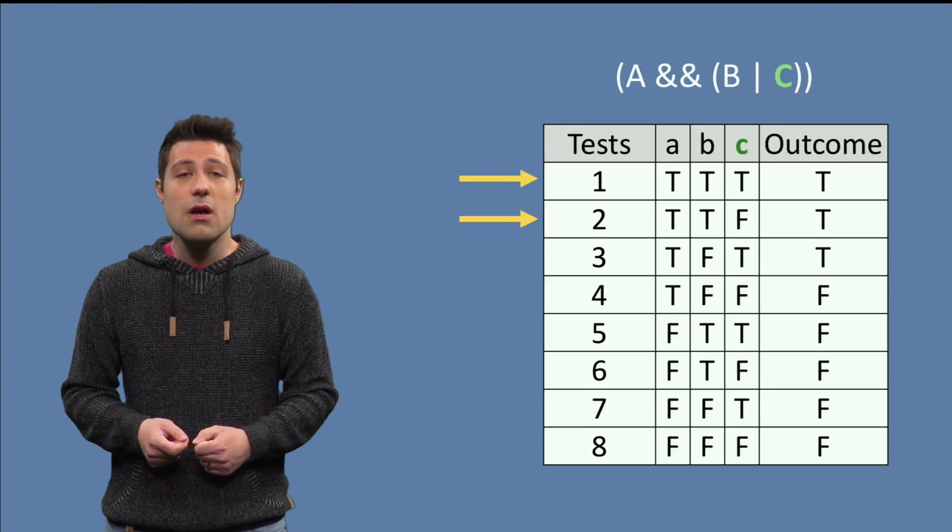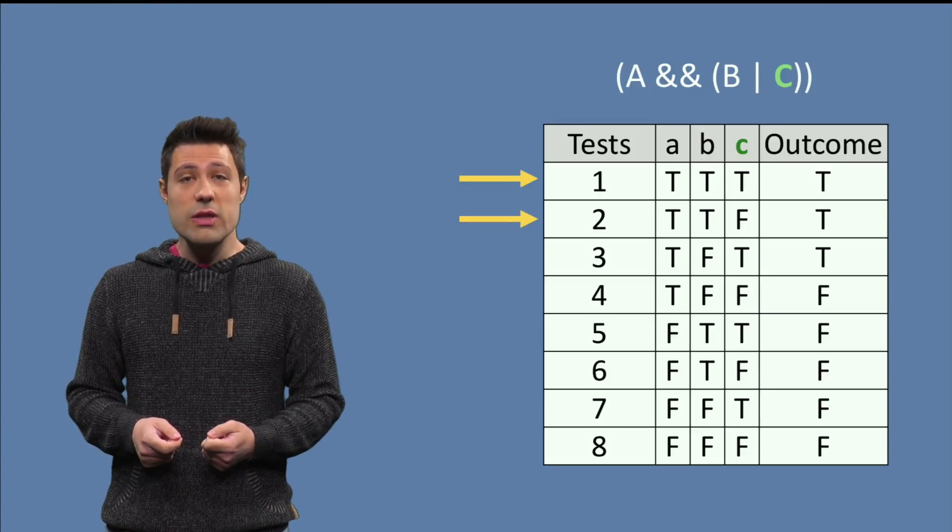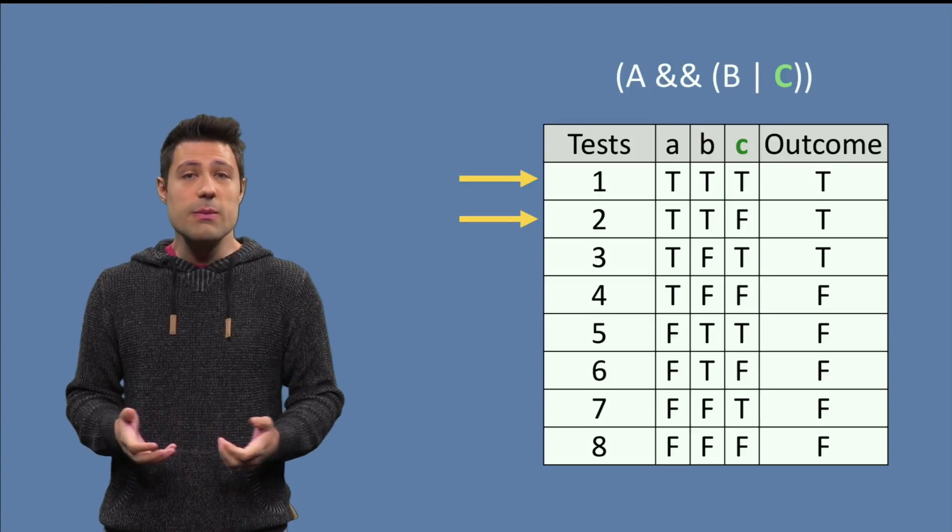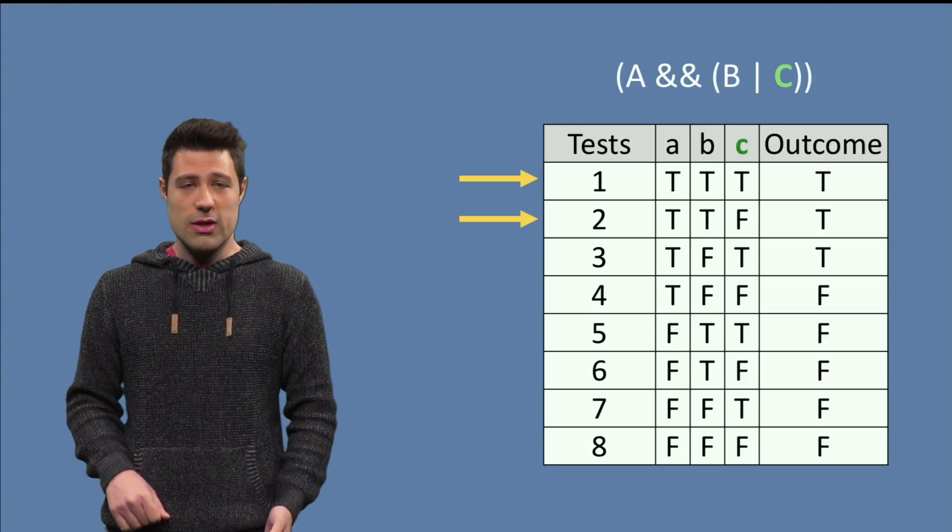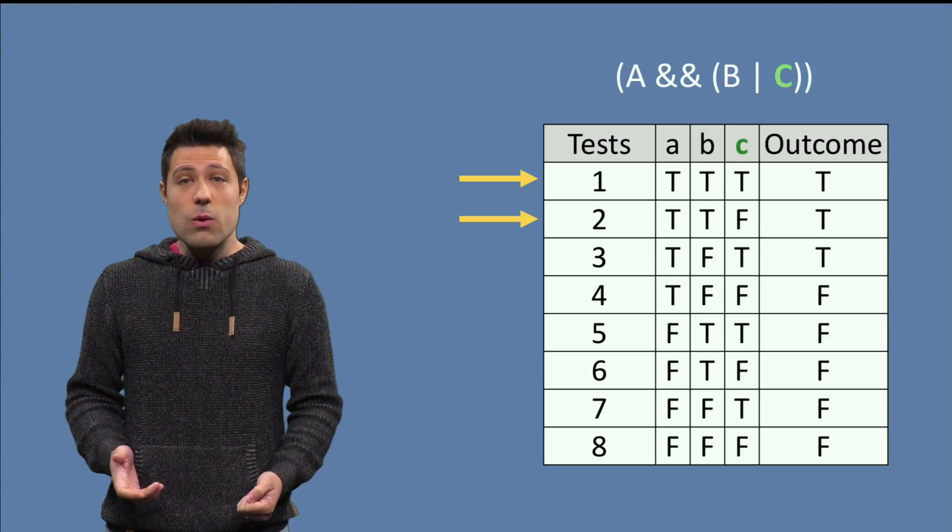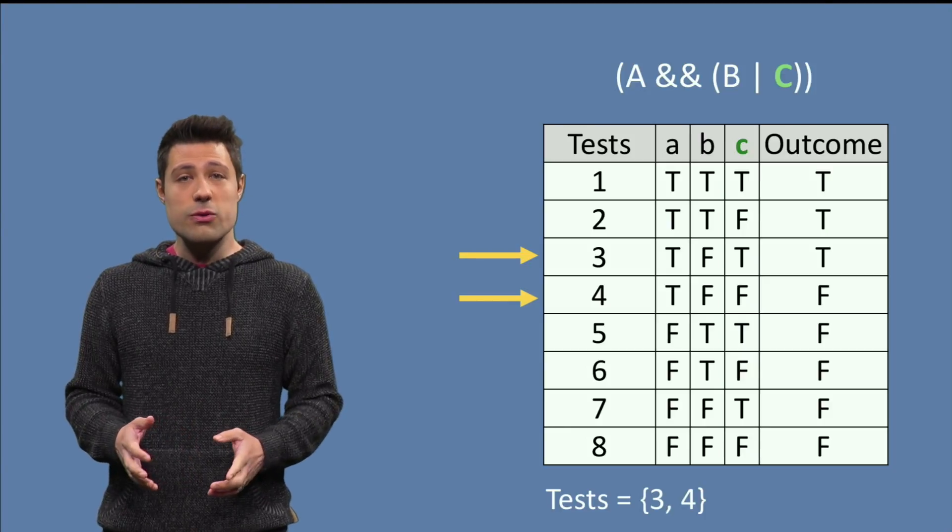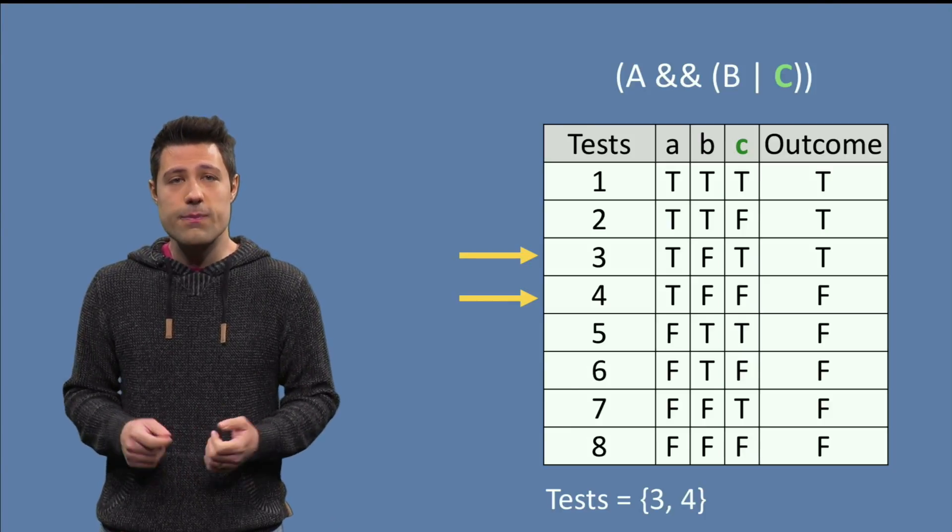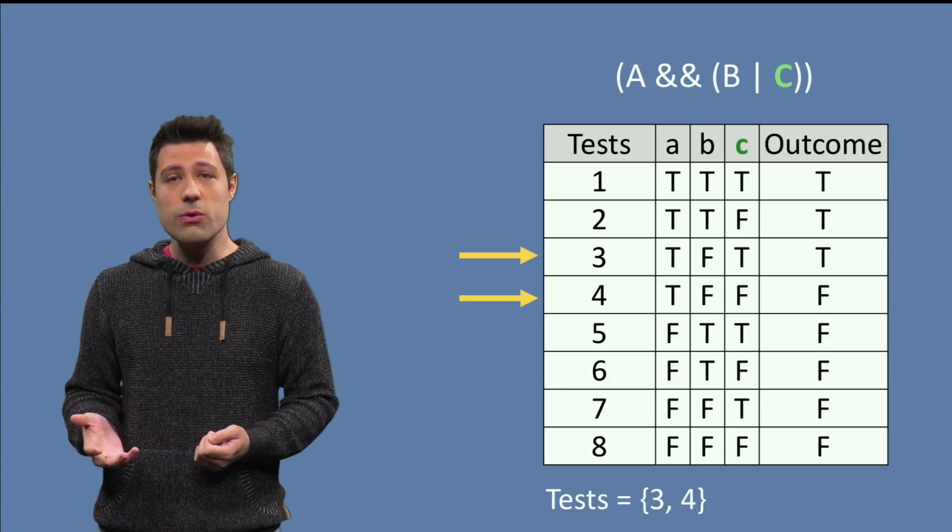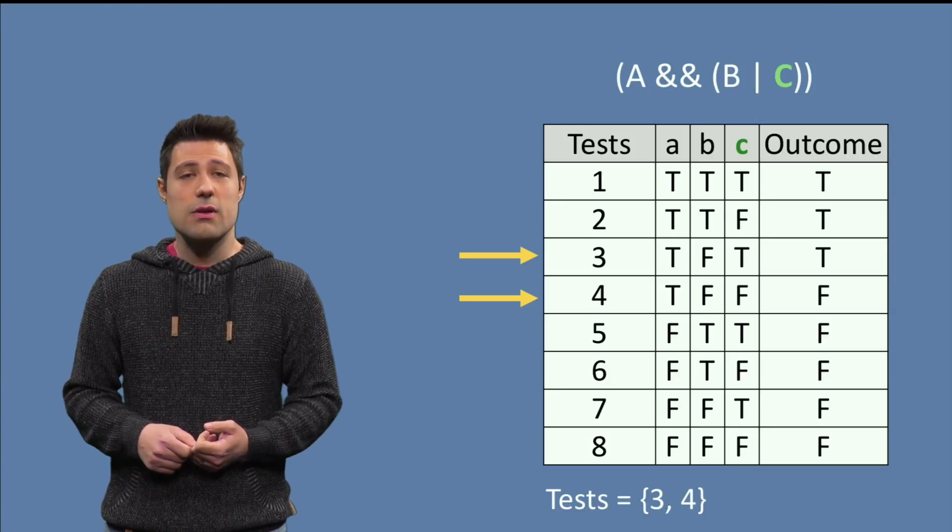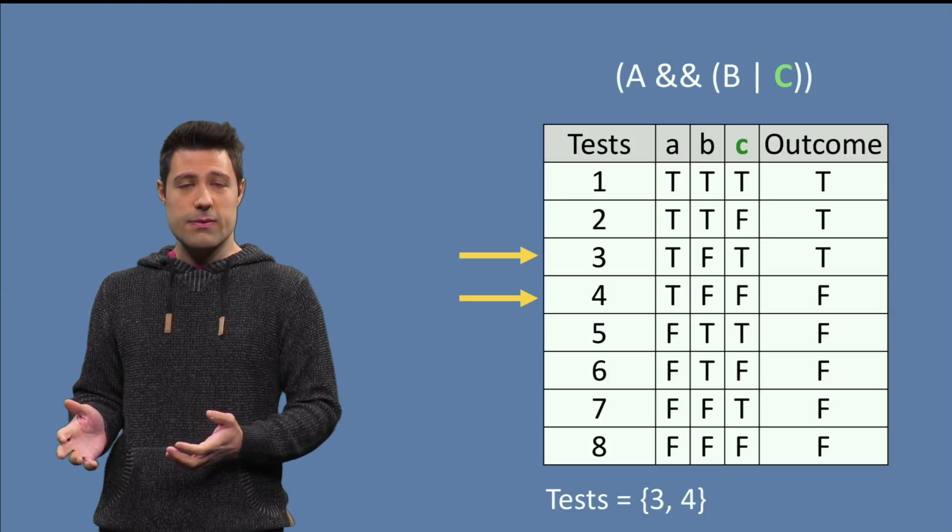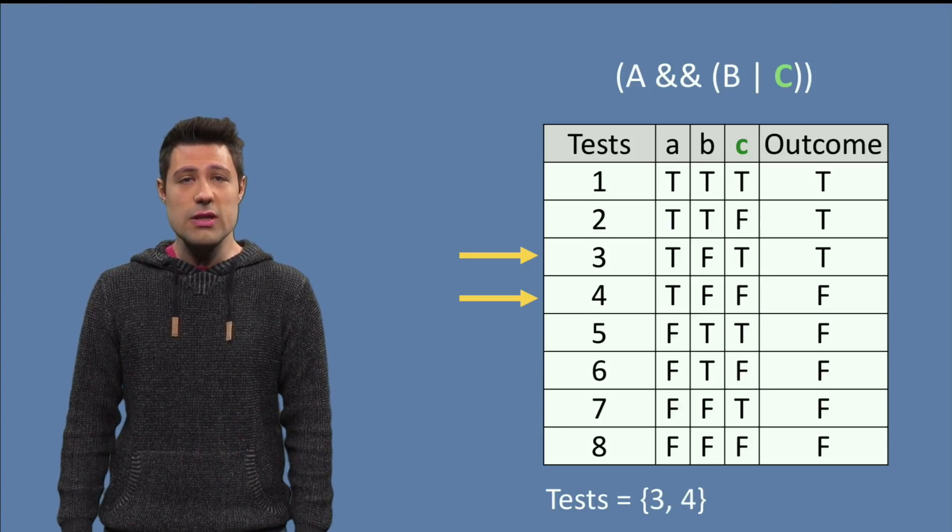Finally, condition C. Rows 1 and 2 are the ones with C flipped, and the outcome is the same, so not interesting. Then, we see that in row 3, A true, B false, C true, and row 4, A true, B false, C false, the outcomes are different, so we add them to our list. And that's also it for condition C.